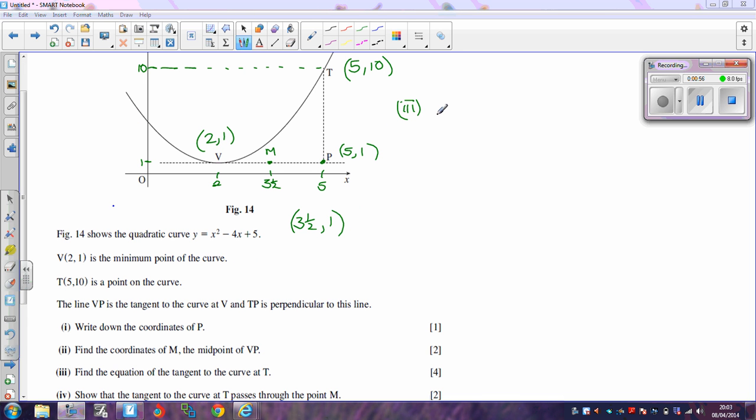Your next job is to find the equation of the tangent to the curve at this point here, and for that we need to know what the gradient is, and the gradient of the curve is dy by dx. So for this curve, we know that y is equal to x squared minus 4x plus 5,